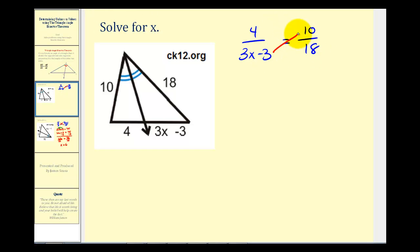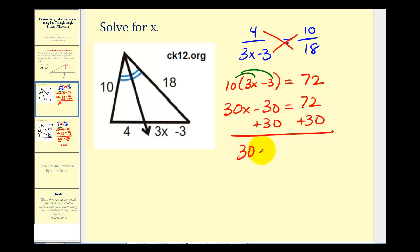Now to solve for X, again we'll cross multiply. So we have 10 times 3X minus 3 equals 4 times 18, which gives us 72. Distribute the 10. So we'll have 30X minus 30 equals 72. So add 30 to both sides. So we have 30X equals 102. 102 divided by 30.